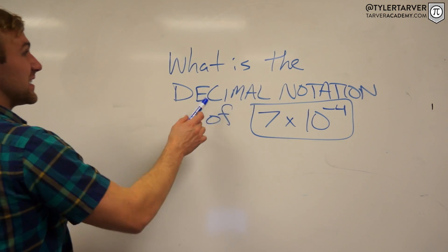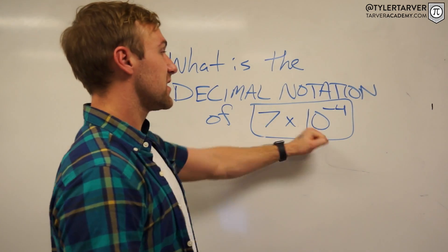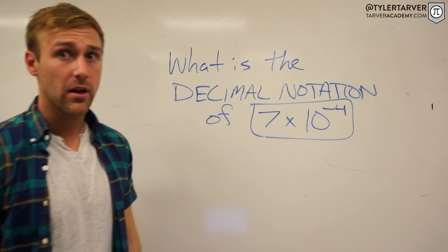Okay let's get started, shall we? Your problem of the day: What is the decimal notation of 7 times 10 to the negative fourth?